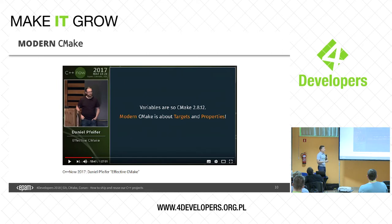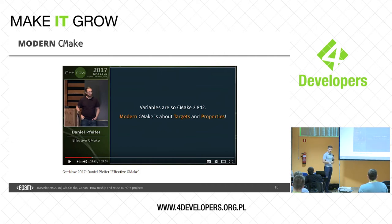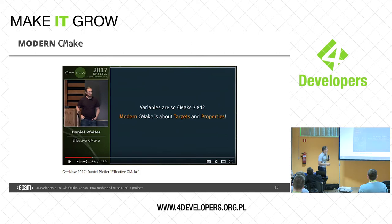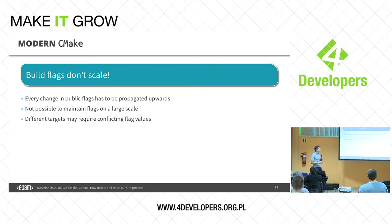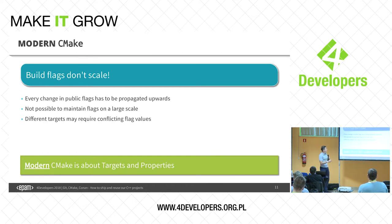Modern CMake is everything after CMake 2.8.12. According to Daniel Pfeiffer — I really recommend watching his video from C++ Now — build flags don't scale. Modern CMake is about targets. You should not be manually setting C++ flags, include directories, or defines. Every change in public flags has to be propagated upwards, it's not possible to maintain flags at large scale, and different projects may require different flag settings.